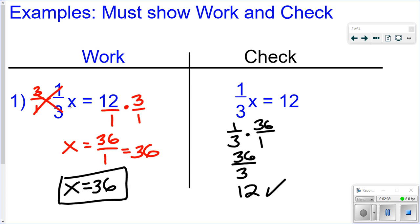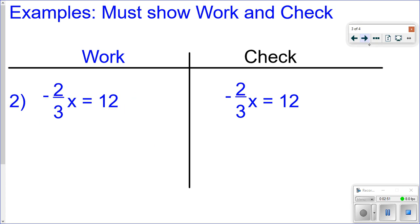OK, so when you have a fraction multiplied times the variable, that's when you can use this trick of multiplicative inverse. So fraction times the variable. So let's look. I have another example of this. So here we have a fraction times the variable. So negative 2 thirds times some number equals 12. And we're trying to figure out what that number is.